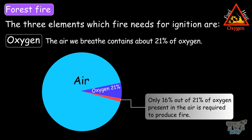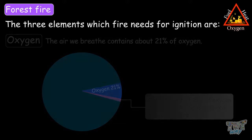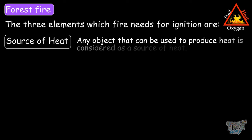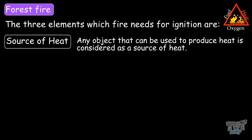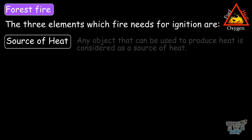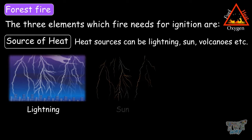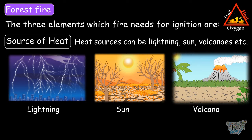Now, the third element for fire is heat. Any object that can be used to produce heat is considered a source of heat. There must be a heat source to start the combustion process. This heat source can be lightning, the sun, volcanoes, or others.